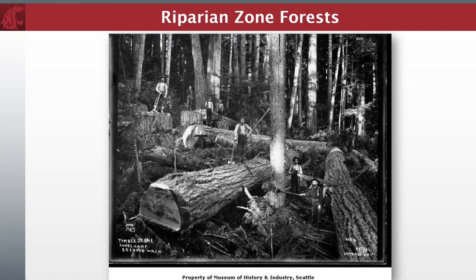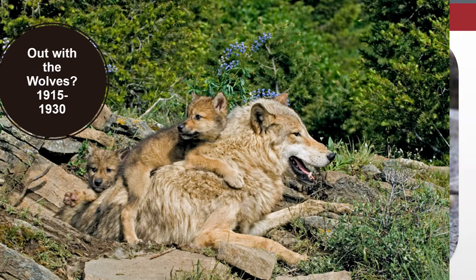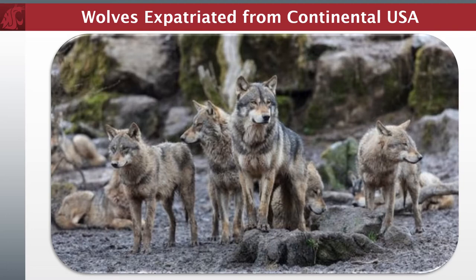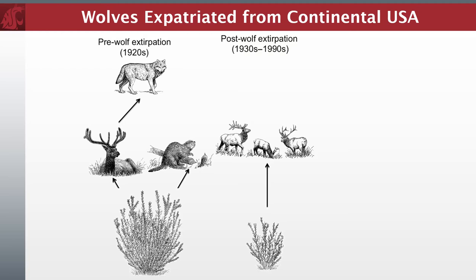Gray wolves are native to Washington and part of our state's wildlife heritage. They were eliminated across the continental USA by the 1930s. By 2020, they are now returning to the state on their own. As a top predator, wolves naturally help keep wild elk, deer, and moose populations in balance with the available habitat, and maintain herd health by preying primarily on weaker or older animals. Recovering this endangered species will help return an important missing element of Washington's complex of carnivores and their prey, which provides multiple benefits to a myriad of other species in an ecosystem.